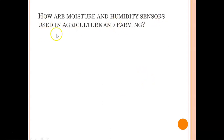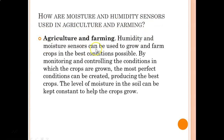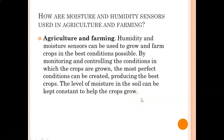How are moisture and humidity sensors used in agriculture and farming? Humidity and moisture sensors can be used to grow and farm crops in the best conditions possible. By monitoring and controlling the conditions in which the crops are grown, the most perfect conditions can be created, producing the best crops. The level of moisture in the soil can be kept constant to help the crops grow.